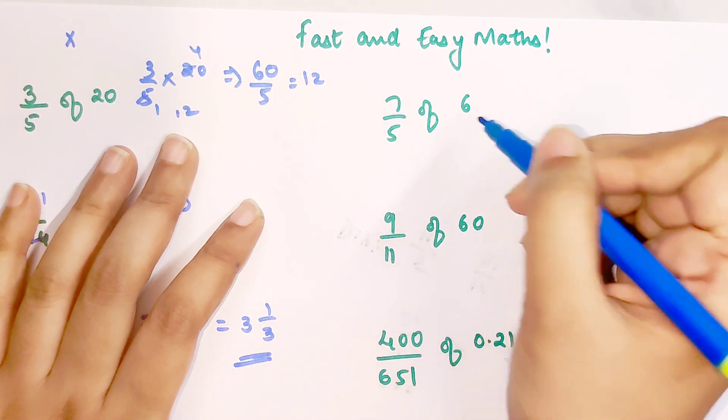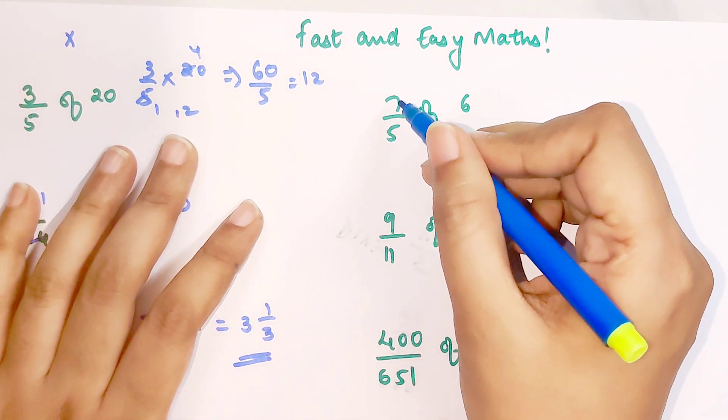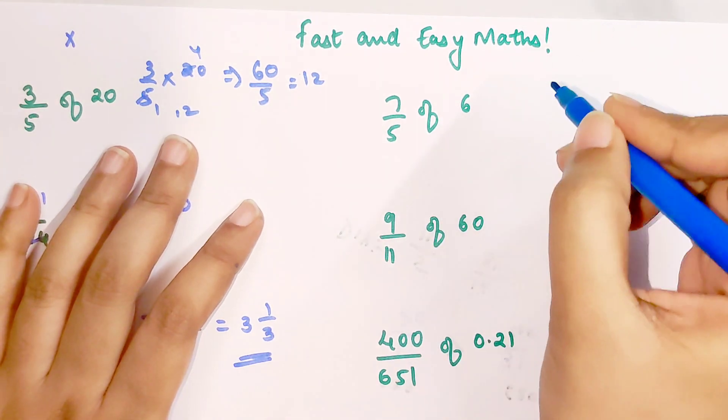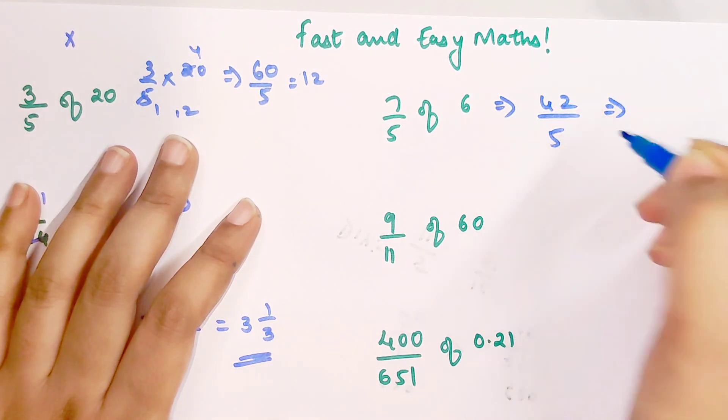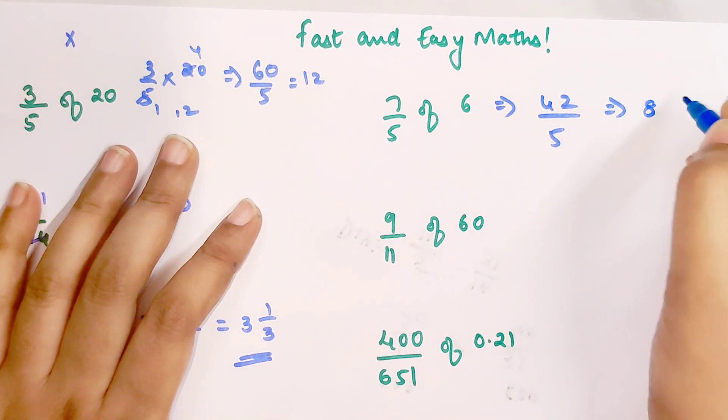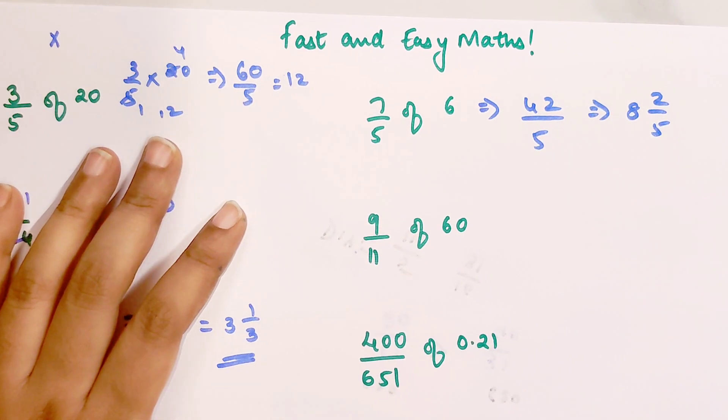So now 7 upon 5 of 6. Over here we know all three are not going in each other's tables, so here I can directly do 42 upon 5. This is again an improper fraction, so we'll have 8 and 2 by 5. This is your answer.